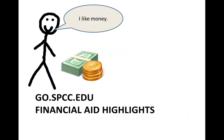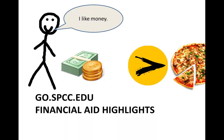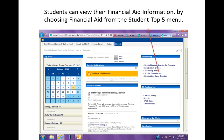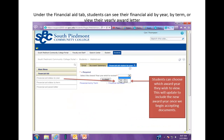That's it for registration. Now we're going to move on to financial aid highlights. If you want to look at your financial aid, under the Student Top Five, click on 'Click for Financial Aid.' Once you've done that, you'll be taken to a screen where you choose which year you want to look at — this will include all the years you've attended.